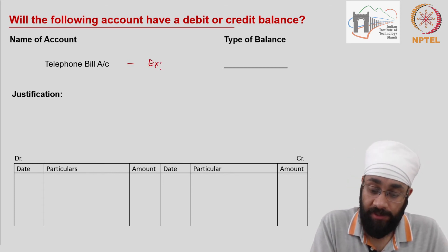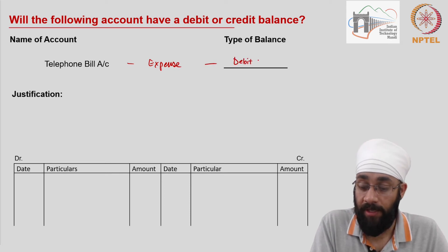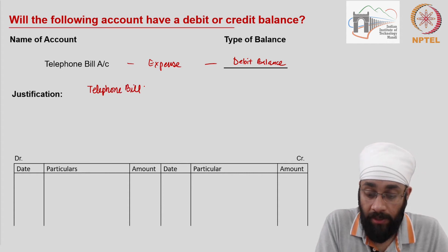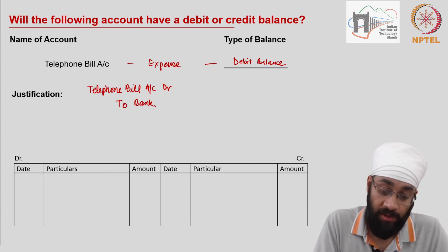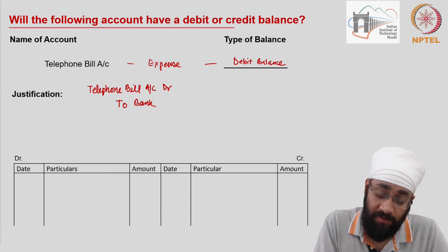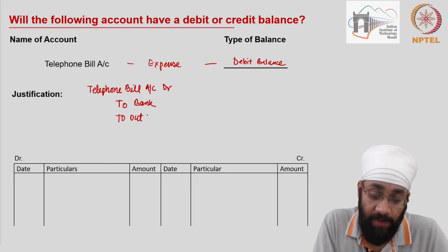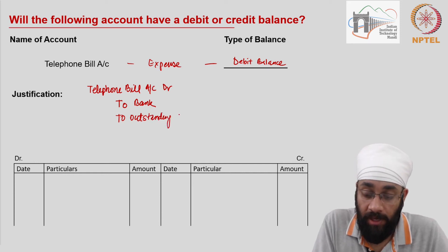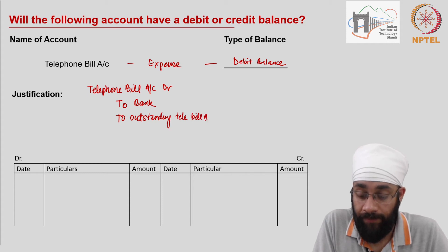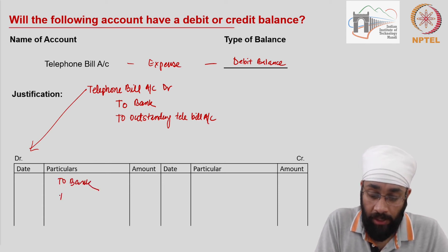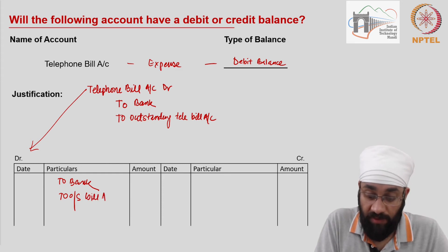Let me justify this. When you pay any expense, the journal entry is the name of the expense account debit — so telephone bill account debit — to bank or to cash, depending on your payment mode. If you do not pay, instead of bank account you write: outstanding telephone bill account. So it is always debited and will always have a debit balance.